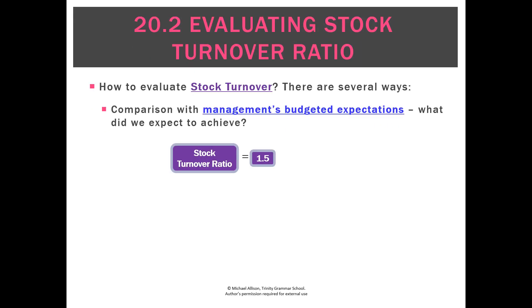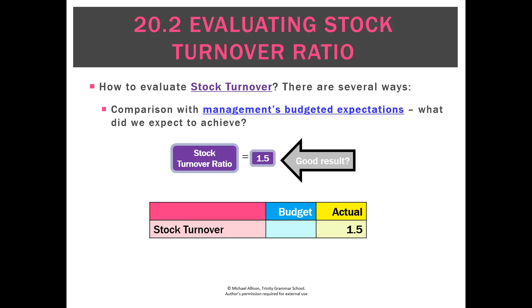Looking at the ratio — say the number 1.5 is what we achieved, and our budgeted expectation was 1.2. Is that a good result or a bad result? This is where the ratio itself is difficult to interpret when it's not in the number of days — it can be quite tricky. With this one we're going to say that is actually a good result. We turned over our stock one and a half times this period, and we only planned to do it 1.2 times. So on average that's good.